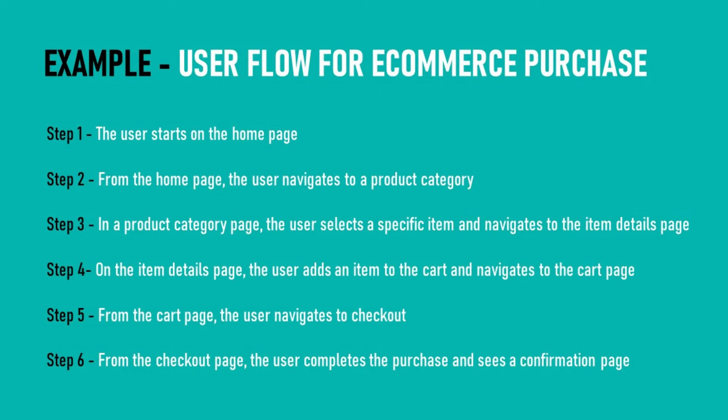In this example, it's a very straightforward flow that the user has gone through in a simple way. But in other scenarios, there would be different paths the user can take to accomplish a goal — like comparing different products, reading about delivery, or adding to the cart without checking out right away. That's why user flow is typically modeled as a flowchart with many nodes or various paths the user might take.